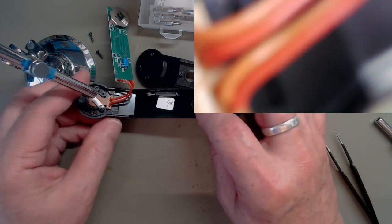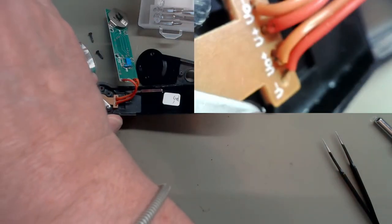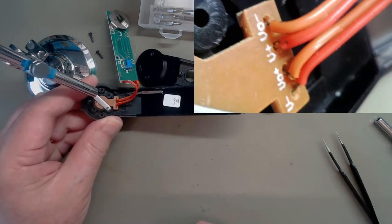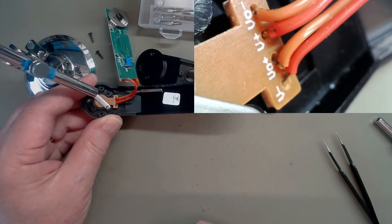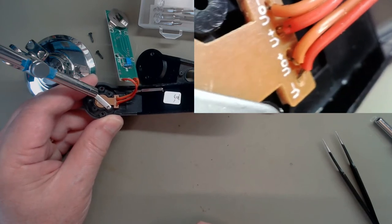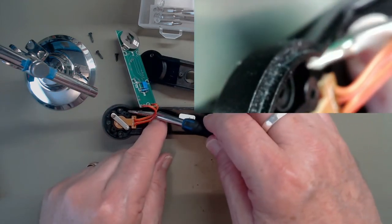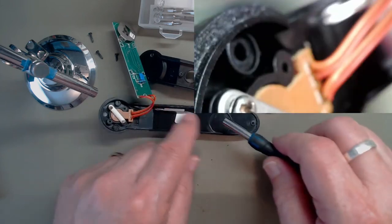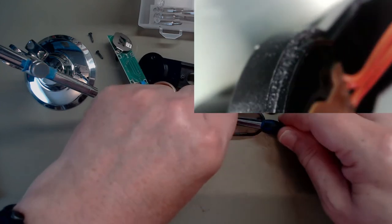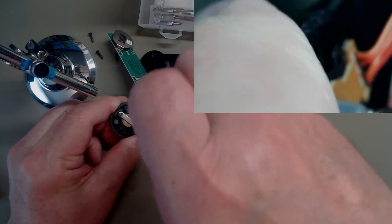On the back of that PCB it says U minus, U zero plus, U plus, U zero minus. Must be some form of strain gauge, probably a Wheatstone bridge type strain gauge. Nothing too spectacular.